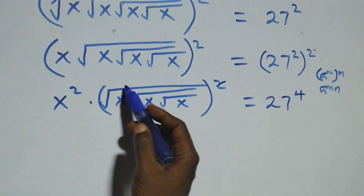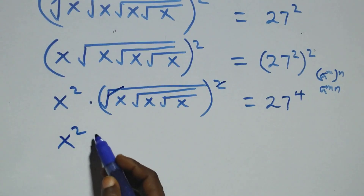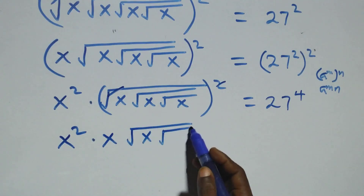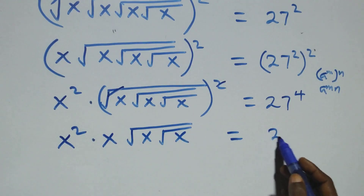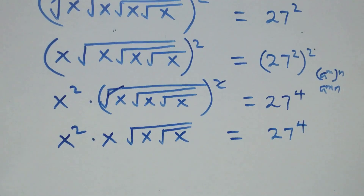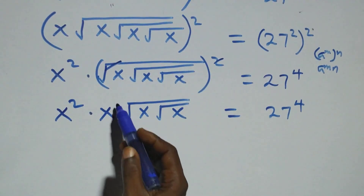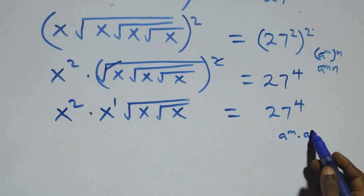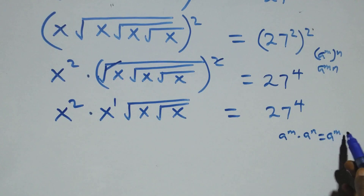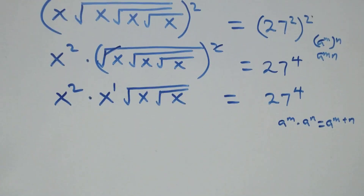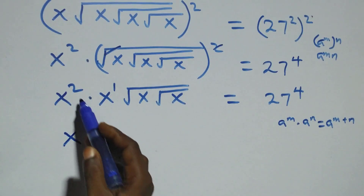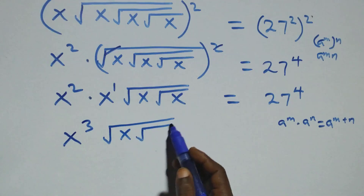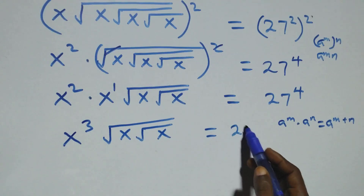So we have x squared times x times x times square root of x, times square root of x, equal to 27 raised to power 4. Using the rule that a raised to power m times a raised to power n equals a raised to power m plus n, this becomes x raised to power 2 plus 1, that's 3, times square root of x, times square root of x, equal to 27 raised to power 4.